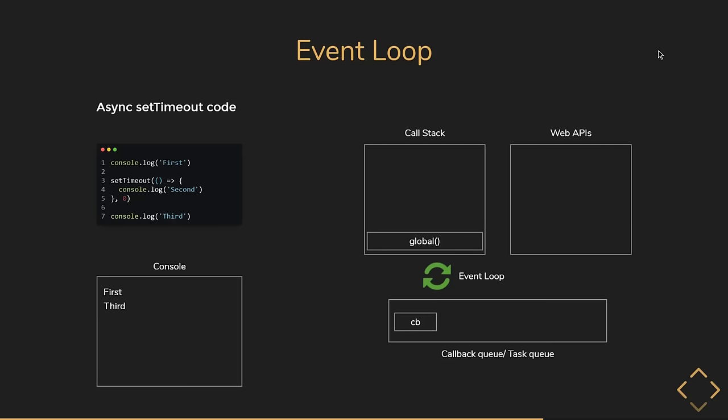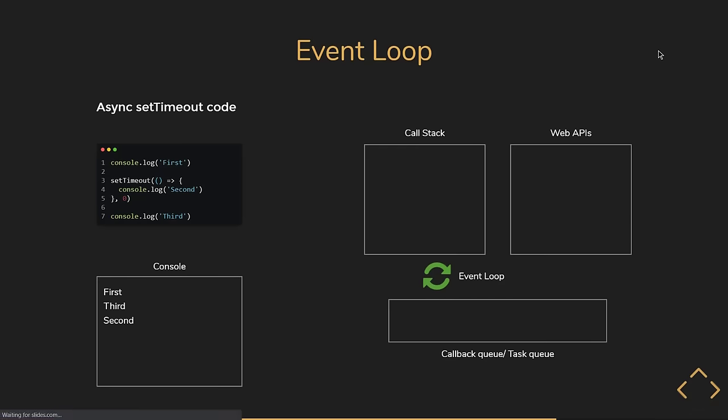The event loop checks if the call stack is empty — it is not, because console.log is still on the stack. So the callback cannot be pushed. JavaScript logs 'third' to the console and pops the function. Since the event loop constantly checks the queue and the call stack is now empty, it pushes the callback onto the stack. At 4 milliseconds, the callback executes — 'second' is logged. As you can see, a setTimeout of 0 milliseconds doesn't mean the statement is executed immediately — it has to wait for the call stack to be empty.